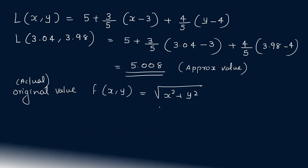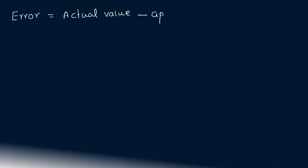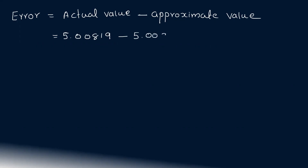The actual value is f(3.04, 3.98) = √(3.04² + 3.98²) = 5.00819. The error is: actual value minus approximate value = 5.00819 − 5.008 = 0.00019.